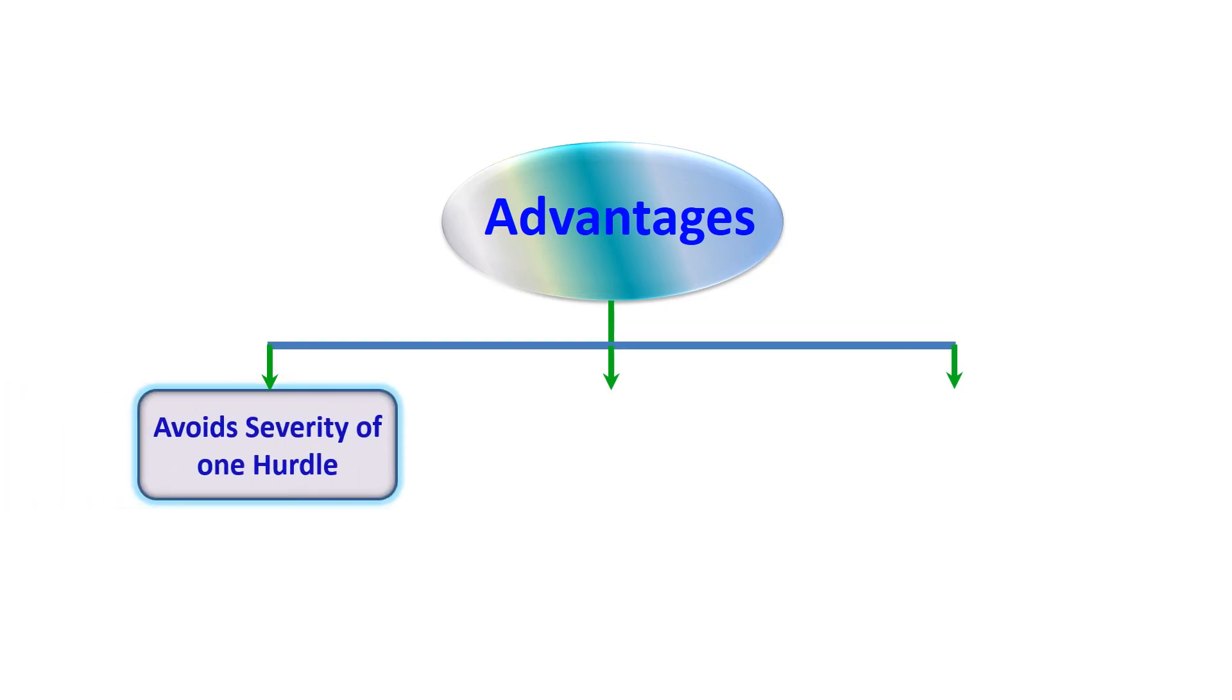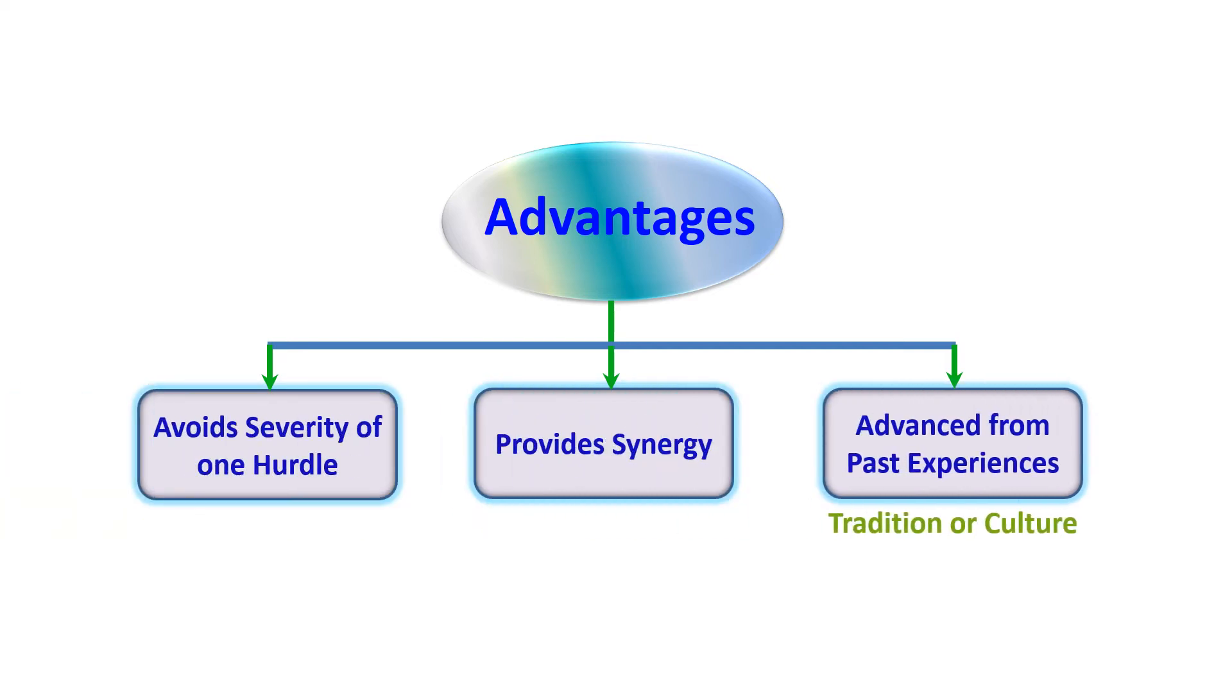What are the advantages of hurdle technology? There are three main advantages of hurdle technology in food preservation. It reduces severity of one hurdle. It provides synergy if hurdles are used in a smart way and intelligent way to achieve desired food products. Many of the hurdles are advanced from the past experience or from tradition and culture. In this case, generally products are passed through long safety of evidence. In general, traditional means it has good evidence and record of safety.